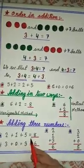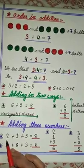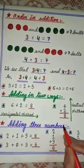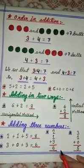Three digit addition also we can arrange in two ways. In the horizontal method also and in the vertical method also.